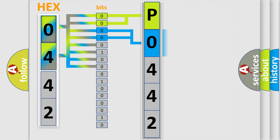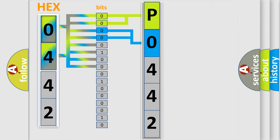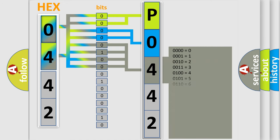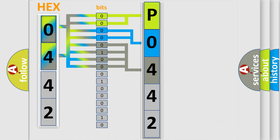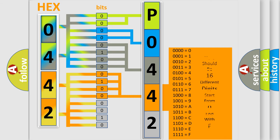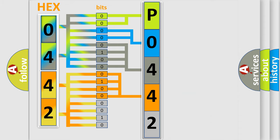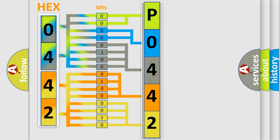The next two bits determine the second character. The last bits of the first byte define the third character of the code. The second byte is composed of a combination of eight bits. The first four bits determine the fourth character of the code, and the combination of the last four bits defines the fifth character. A single byte conceals 256 possible combinations.